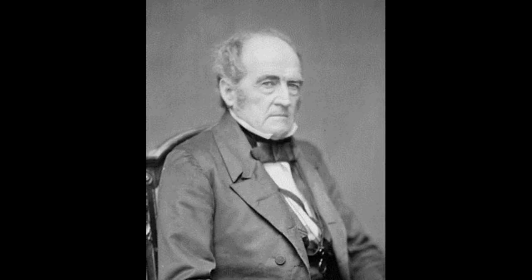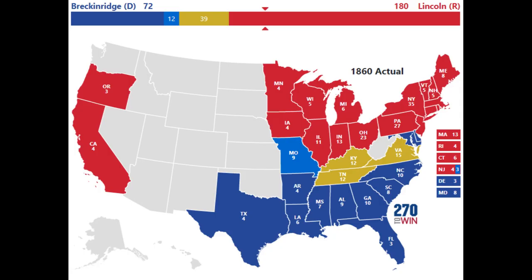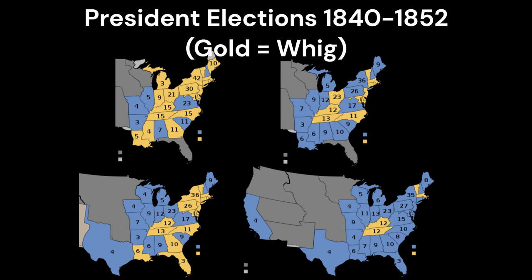Finally, John Bell earned approximately 12.5% of the popular vote, with a total of 39 electoral votes. His victory came from border states: Virginia, Kentucky, and Tennessee. As the Unionists consisted of many disaffected Whigs, winning the former Whig strongholds of Kentucky and Tennessee is not surprising.